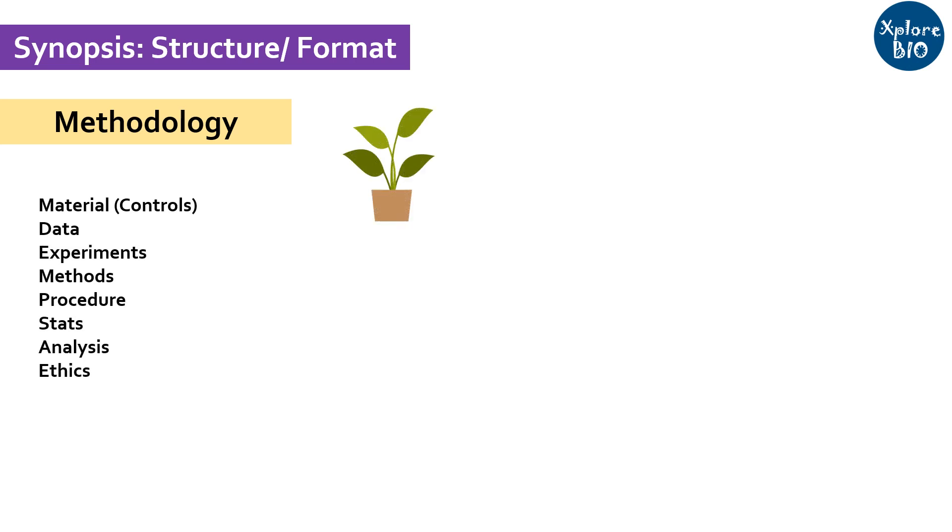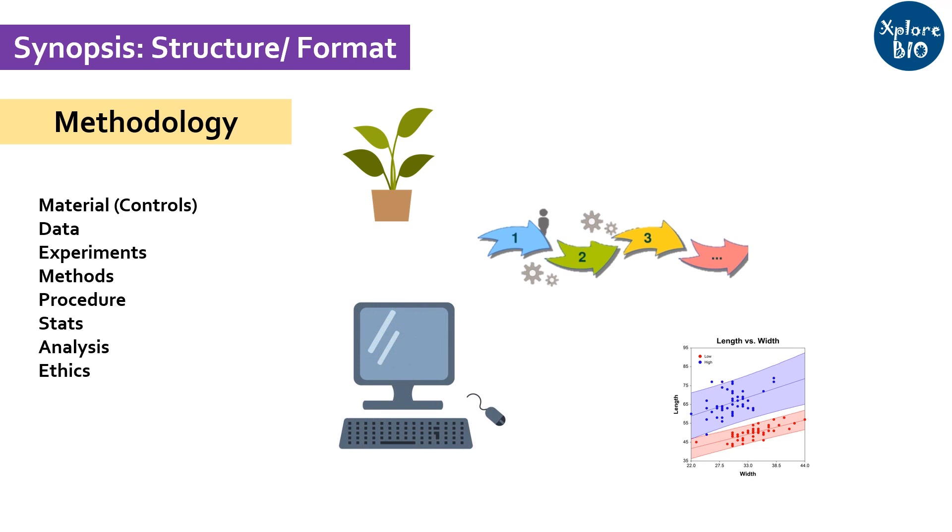The next important section of your synopsis is methodology. Here, you briefly mention the material or sample you will be using, data collection, procedures, methods you will follow, treatment and control samples, statistics and other computational analysis that will be done. If animal or humans are to be used as model or genetic modification needs to be done, do check if approval from an ethical committee is required.